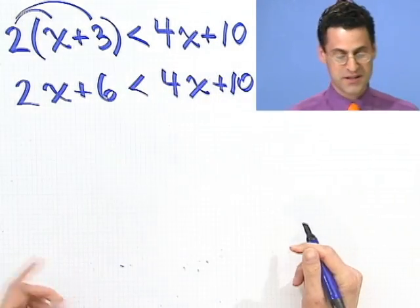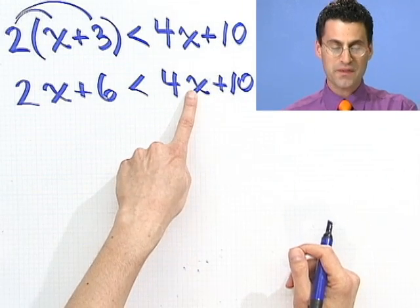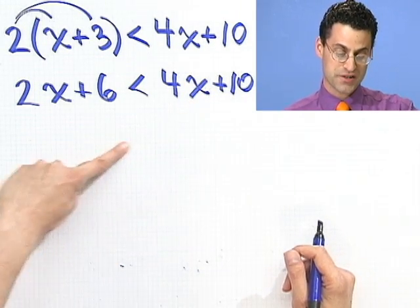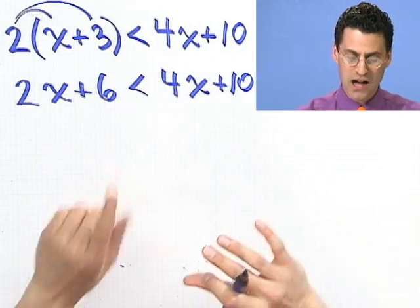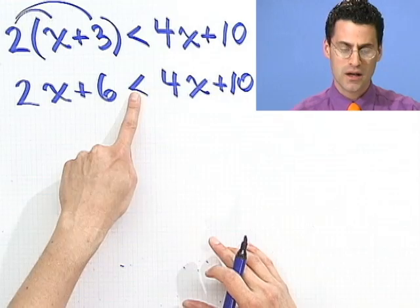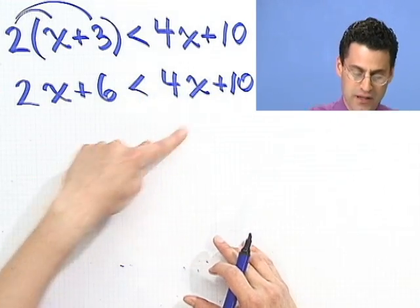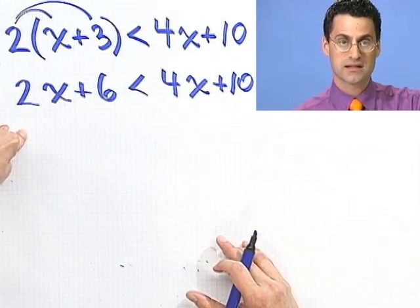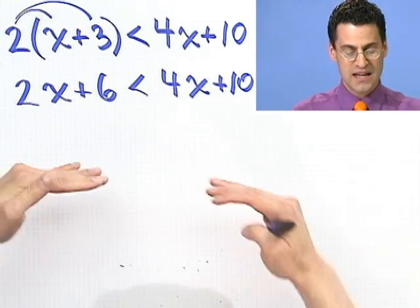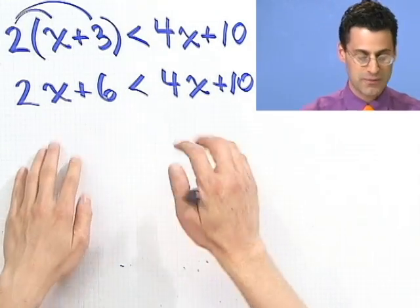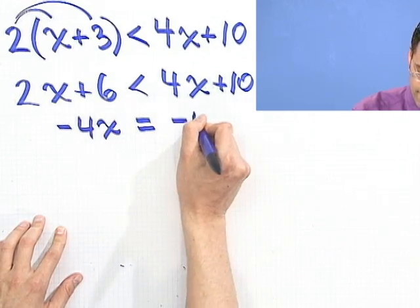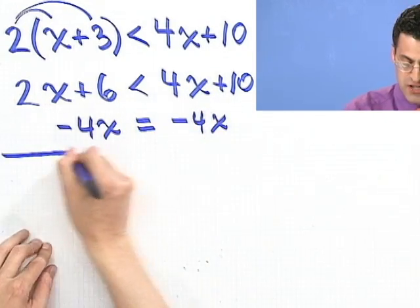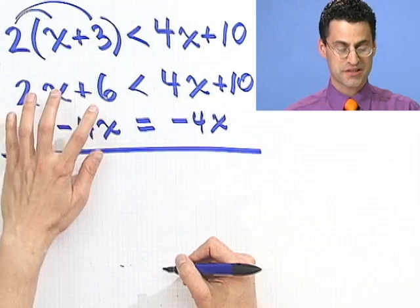I'll bring this 4x over to the other side. So if I subtract 4x from both sides, it's not going to change the inequality. Now, we do this very cavalierly with the equal sign, but let me just make sure what we're really doing here is subtracting 4x from each side. So it's not going to change the balance of power at all. This is still going to be smaller.